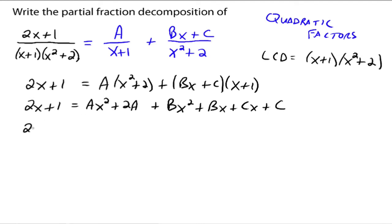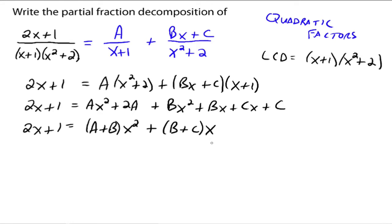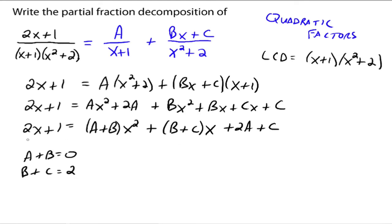Group like terms on the right: Ax squared and Bx squared combine to give A plus B times x squared; Bx and Cx combine to give B plus C times x; and the constants give 2A plus C. Then equate coefficients: A plus B equals zero (no x squared on the left); B plus C equals two (coefficient of x on the left); and 2A plus C equals one (constant term on the left).